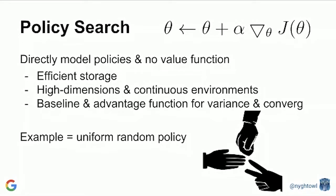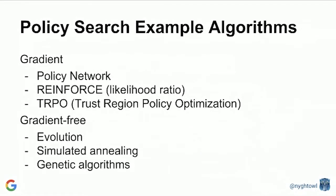Baseline and advantage function are two approaches that have been applied to improve convergence. The algorithms for policy search are broken into two main areas: gradient versus gradient-free. Gradient means you have a model allowing you to do derivatives off the gradient, versus gradient-free being more of a frequency-type approach.